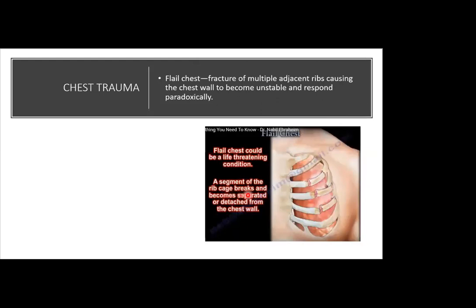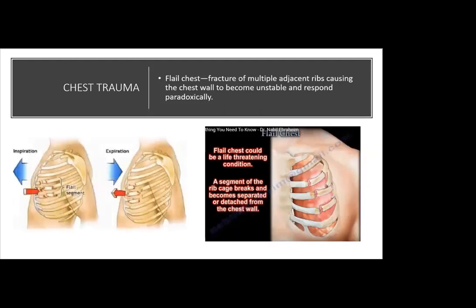A segment of the rib cage breaks and becomes detached from the chest wall — this is a potentially life-threatening condition. The NCLEX may not tell you the patient has flail chest directly; instead, they will describe uneven movement in one segment of the chest. When you see that, you should suspect flail chest.